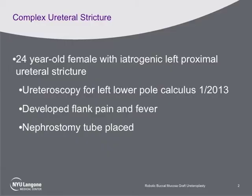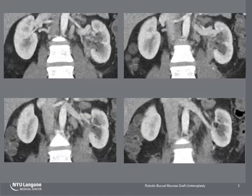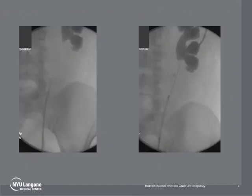The patient is a 24-year-old female with iatrogenic left proximal ureteral stricture after ureteroscopy at an outside hospital. She presented with flank pain and fever after stent removal. CT demonstrated severe hydronephrosis and concentric periureteral thickening. Nephrostogram and retrograde pyelogram demonstrated a 6-centimeter proximal ureteral stricture.